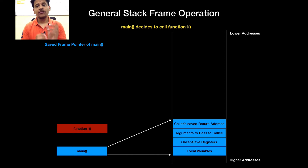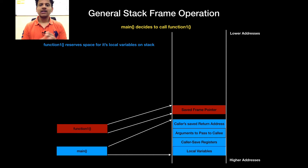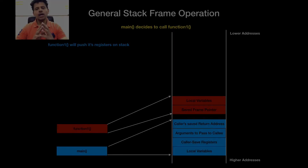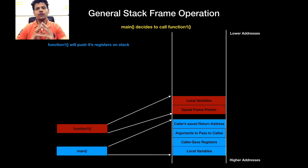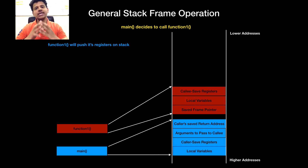First, function 1 will save the frame pointer of main, so the saved frame pointer will be pushed onto the stack. After that, function 1 will reserve space for its local variables onto the stack. Now, if function 1 wants to use some registers, they will be pushed onto the stack before being used by function 1 — known as the callee-save registers.